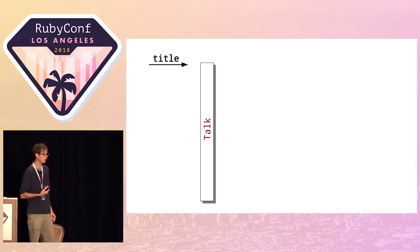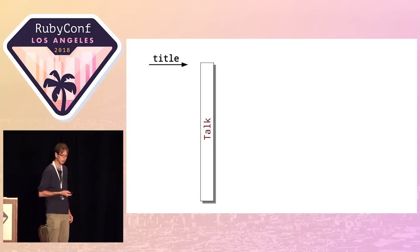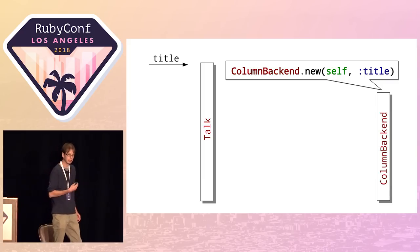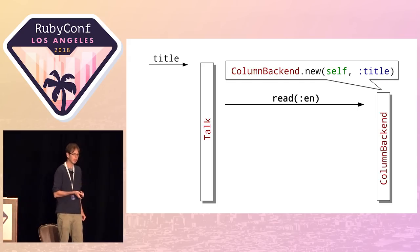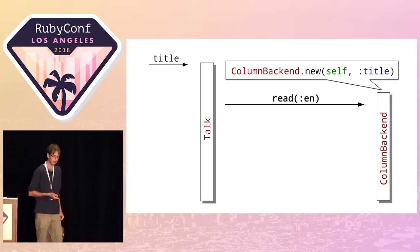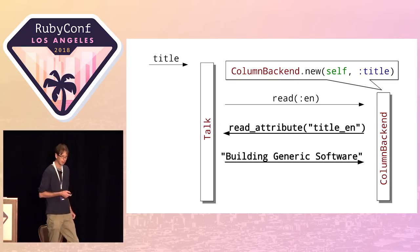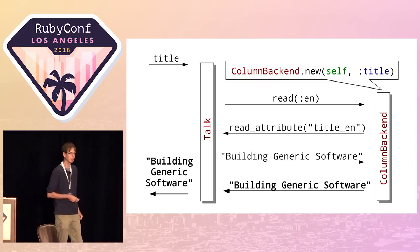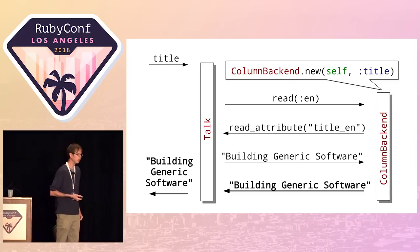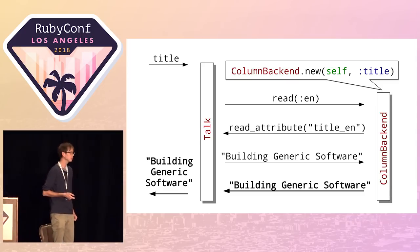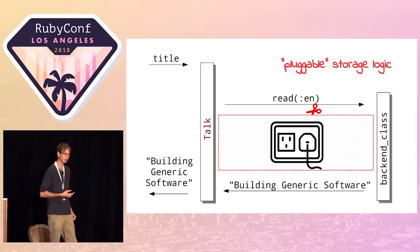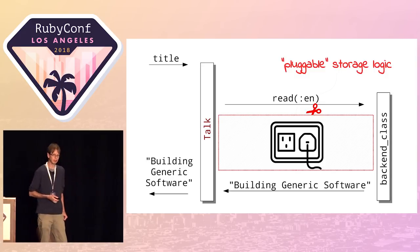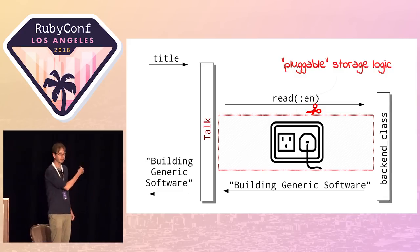To show how this works concretely: if a talk's `title` method is called, first I check if I already have a backend. If not, I create one — passing `self` (the Talk) and the name `title`. Then the talk says to the backend: give me the value for English. The backend says: hey, tell me the value of column `title_en`. The talk says: that's 'building generic software.' The column backend says: that's your answer. The talk returns that to whoever called `title`. The key thing here is that this is the pluggable storage logic we were after — the backend class passed top-down is what actually defines that part of the logic.